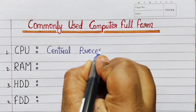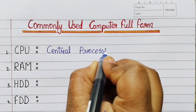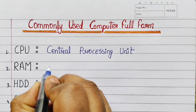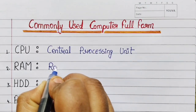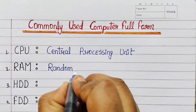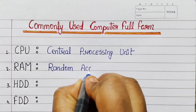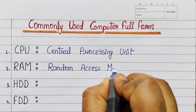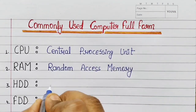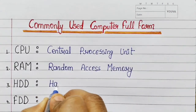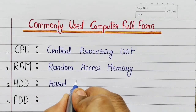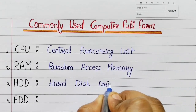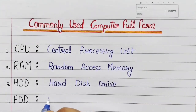Number 1: CPU - Central Processing Unit. Number 2: RAM - Random Access Memory. Number 3: HDD - Hard Disk Drive.